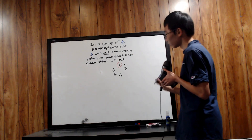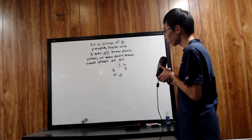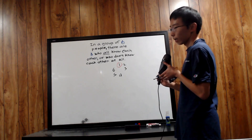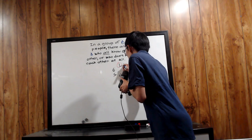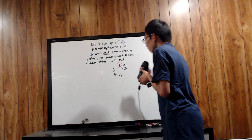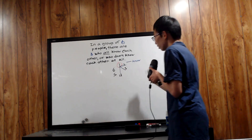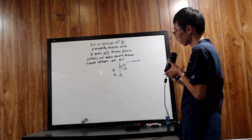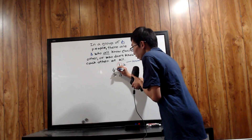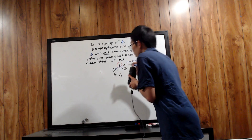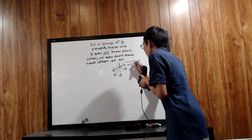I'm going to connect a solid straight line to every person that person one knows. And I'll assume without loss of generality that person one knows persons two, three, and four. I'll connect a crooked line to anyone that person one does not know — so person one does not know five and does not know six. The solid straight line represents knowing; the crooked line represents not knowing.